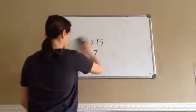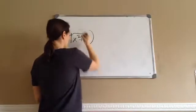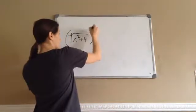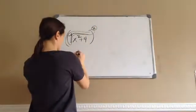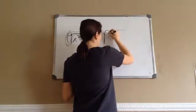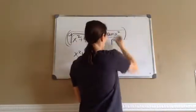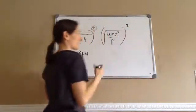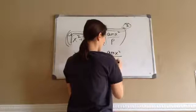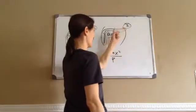Now you're going to learn something a little bit harder. For example, square root of (x² + 4), all squared. Remember, the square root and the square cancel each other out, and we have whatever's left: x² + 4. That's the answer. Similarly, square root of (mx² + p), all squared — this and this cancel out, and we just bring everything down. Regardless of what's inside, the square and square root cancel, leaving what's in the middle.